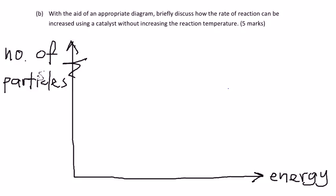The second question asks us to briefly discuss how the rate of reaction can be increased using a catalyst without increasing the reaction temperature. We first draw a graph with the number of particles as the y-axis and the energy of the particles as the x-axis.